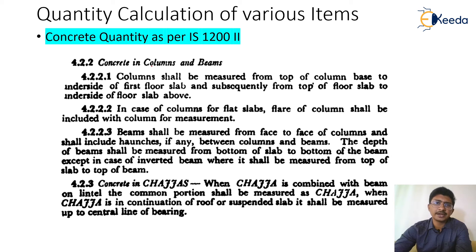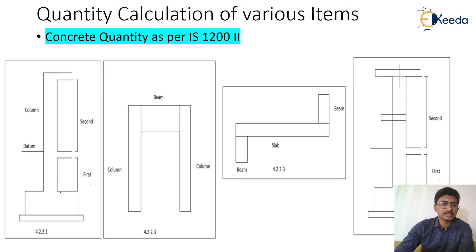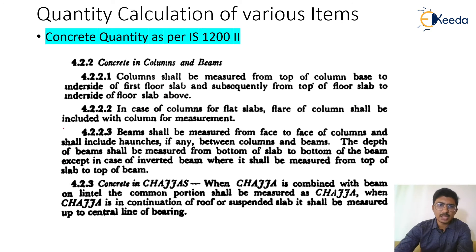Clause 4.2.2 deals with how to define beam length and column length — from where to where you measure. For columns, measurement shall be from the top of the column base to the underside of the first floor slab, and subsequently from the top of the first floor slab to the underside of the next floor slab. So the column length is measured from the top of the foundation to the bottom of the slab above.